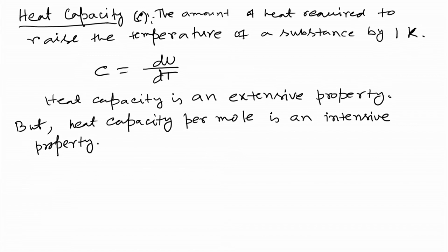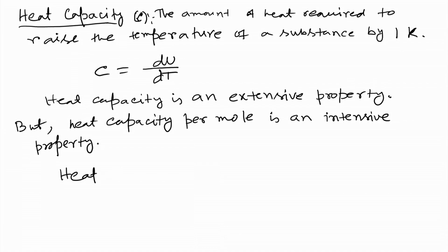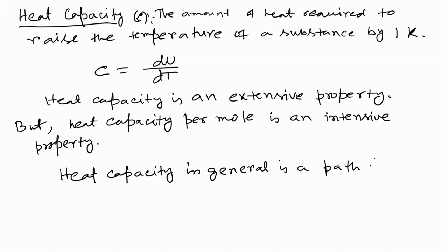Heat capacity in general is a path function, because we get different heat capacity values depending on whether the process is carried out at constant volume or constant pressure. In both cases we get different heat capacity values.